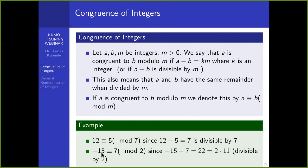Here's another example: negative 15 is congruent to 7 modulo 2. The difference between negative 15 and 7 should be negative 22, which can be written as 2 times negative 11, and therefore it's divisible by 2. So we can say negative 15 is congruent to 7 modulo 2 because the difference is divisible by 2.